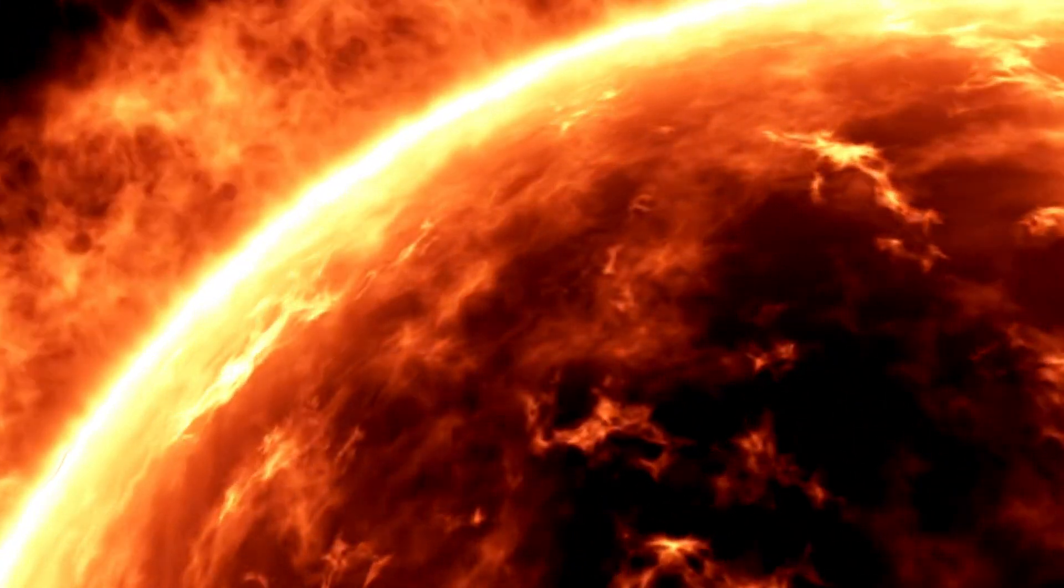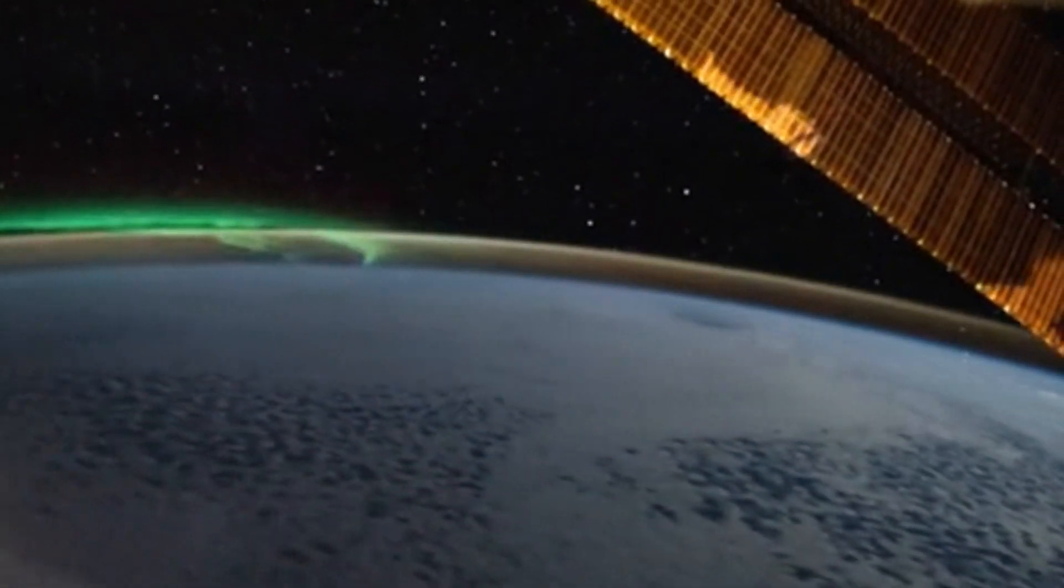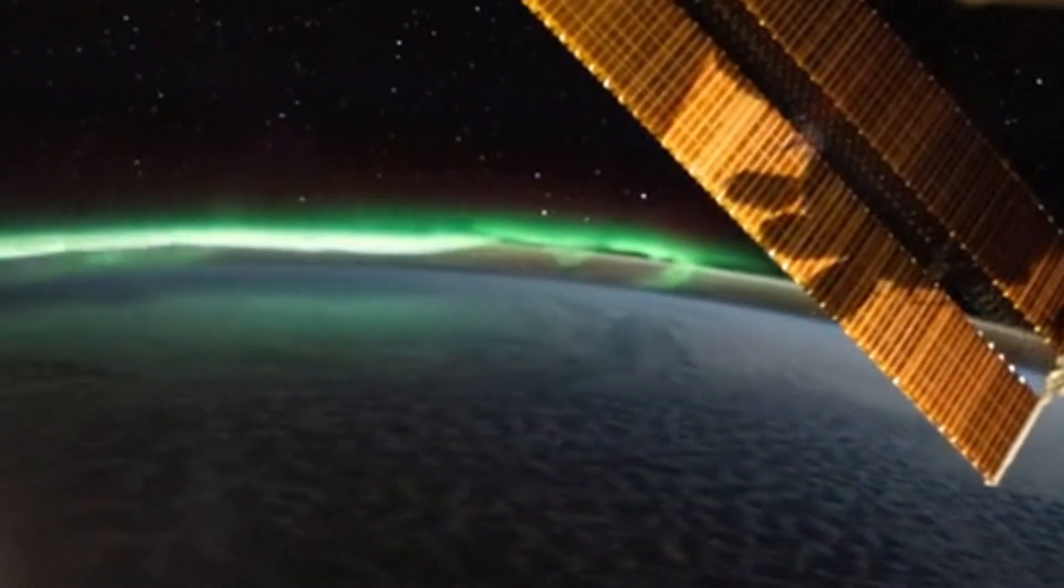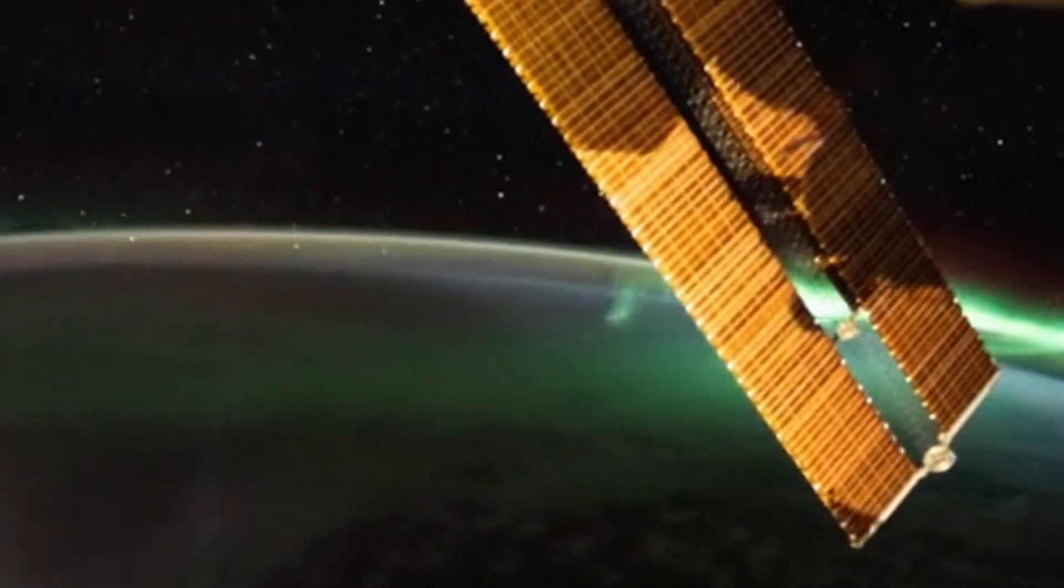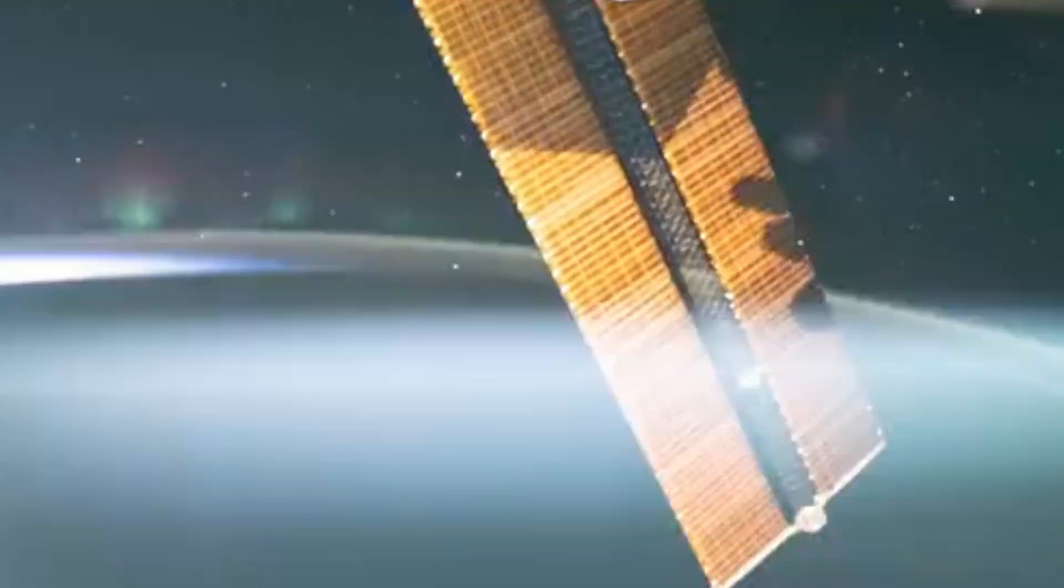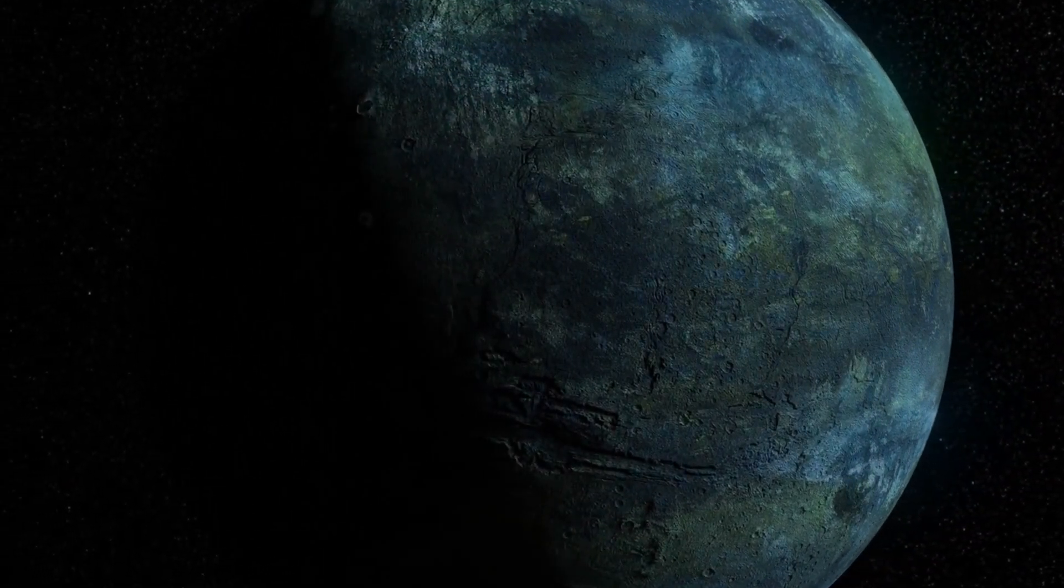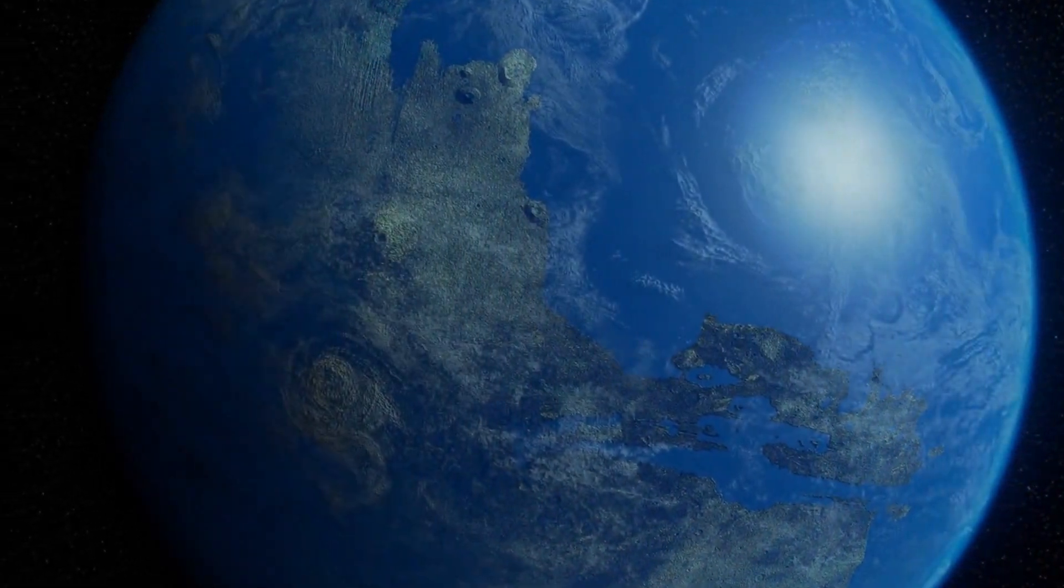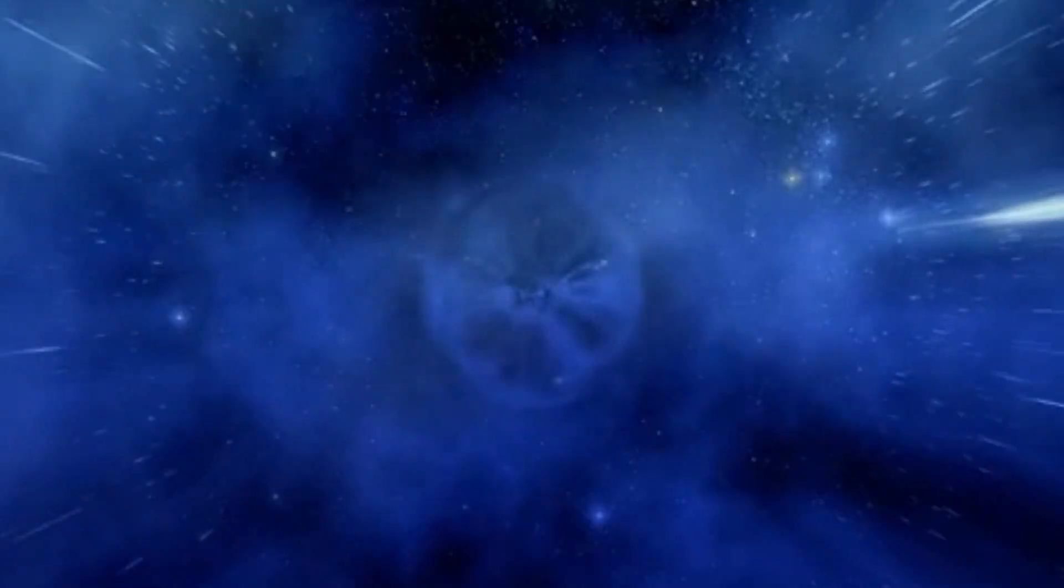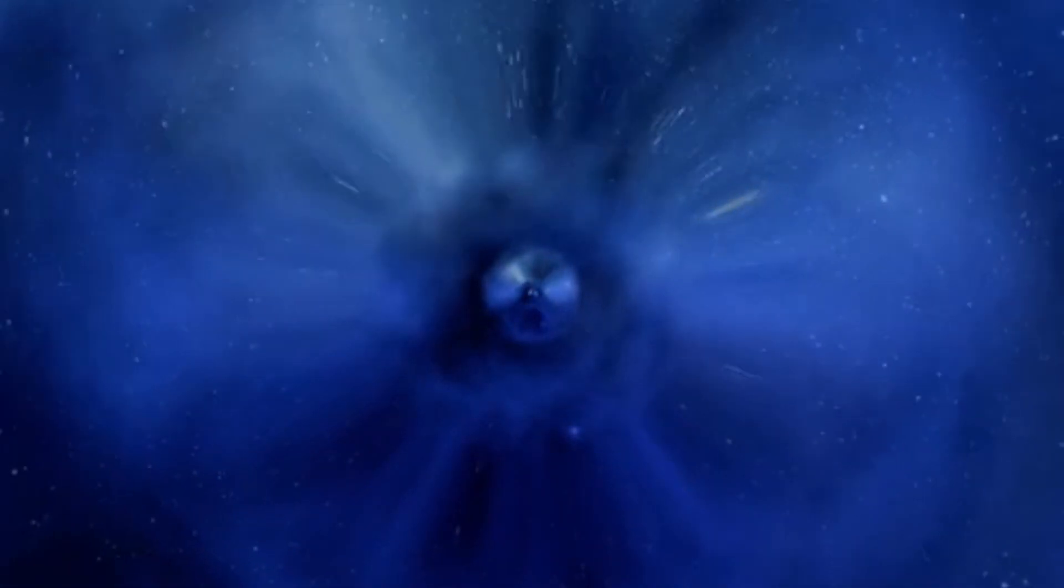Neptune's biggest moon, Triton, turned out to be one of the coldest spots in our solar system, with temperatures dropping to a freezing minus 391 degrees Fahrenheit. Triton also had these cool ice volcanoes that shot out nitrogen gas and icy stuff into its thin air. All these discoveries made us realize how different and interesting the planets and moons in our solar system can be, even the farthest ones.